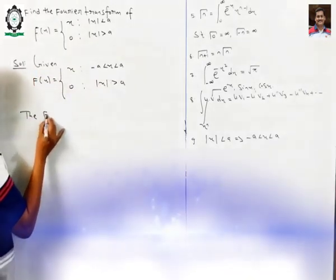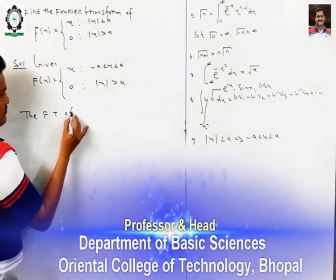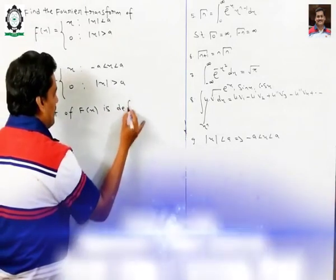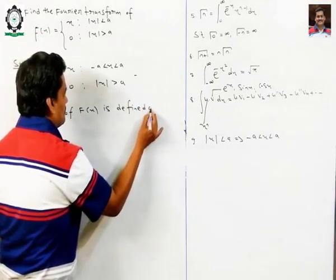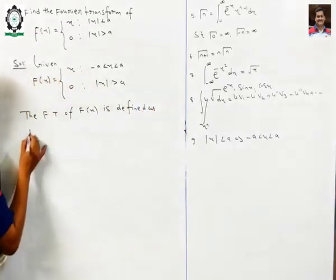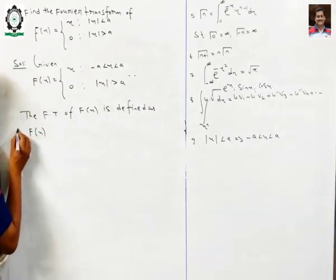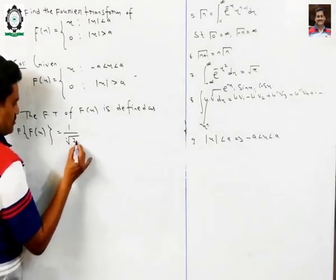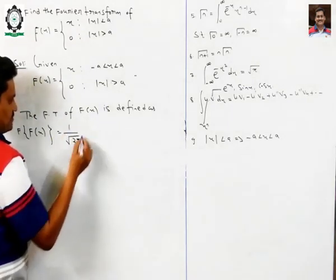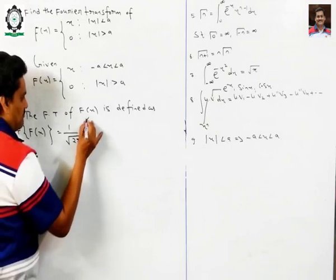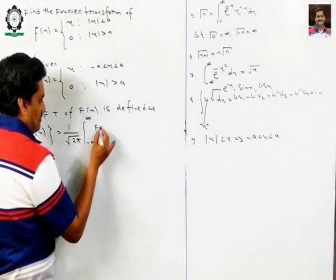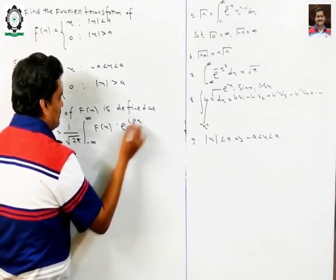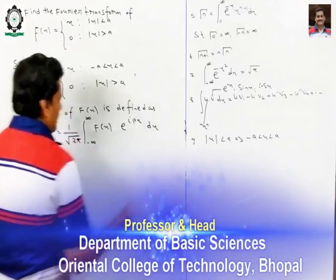The Fourier transform of f(x) is defined as: 1 over the square root of 2π, times the integral from minus infinity to plus infinity of f(x) times e to the power ipx dx.